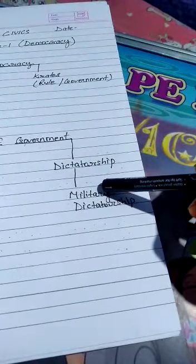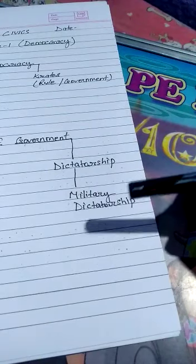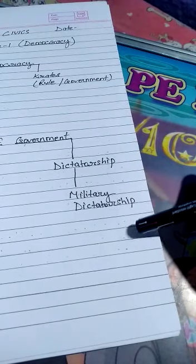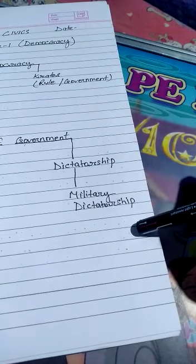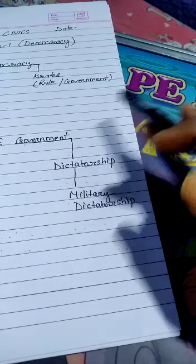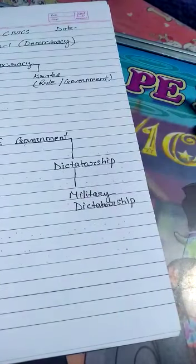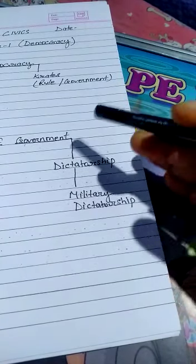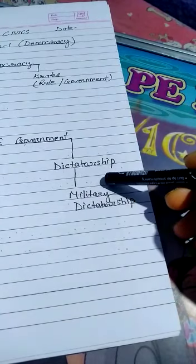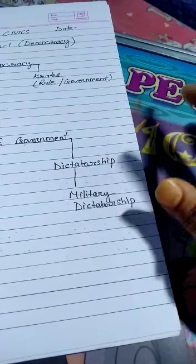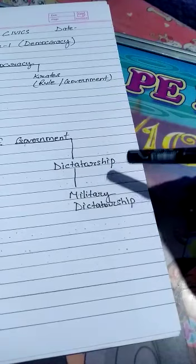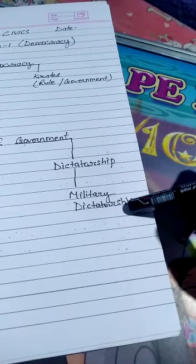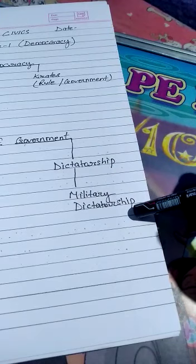Then the dictatorship. In dictatorship, the citizens are ruled by force and the government does not have to explain its policies to the people — people are just nothing in this system. Then the military dictatorship: military dictatorship is the form of government where political power resides with the military.